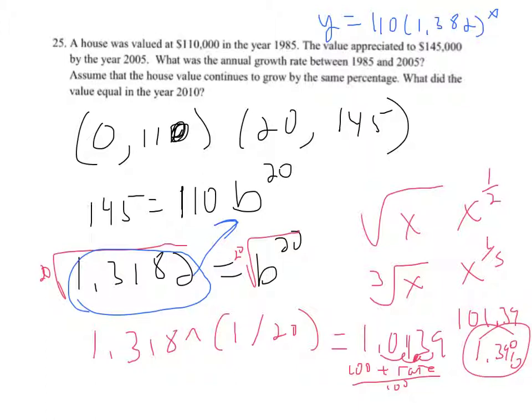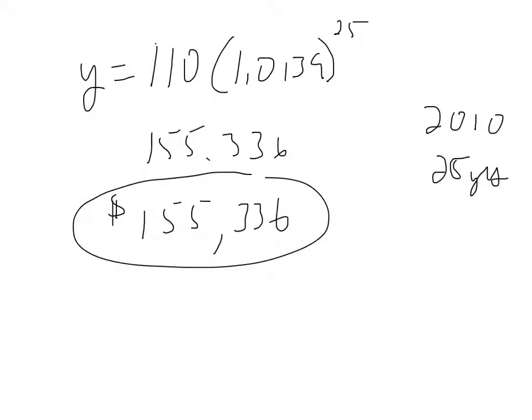Now what we're going to do is find out what the house was worth in 2010. So 2010 is 25 years after 1985, so I just substituted in the time for the x or the t, and I got that, which works out to be $155,336. So I hope that helps you work on these kind of problems.